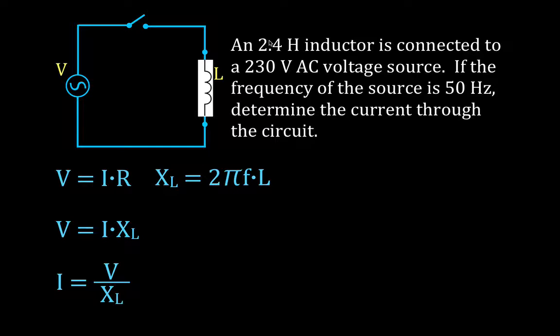And you simply get that's 2 times pi times 50 times 2.4. And that tells us that the reactance of the inductor is 754 ohms.